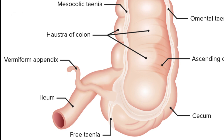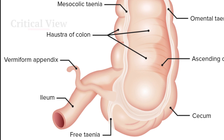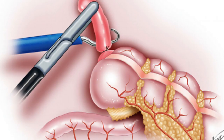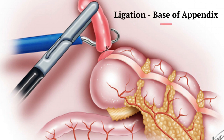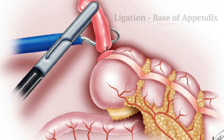Use the appendiceal critical view, in which the appendix is placed at 10 o'clock, the taenia coli and terminal ileum at 3 o'clock. Identification of where the taenia coli merge is paramount to identifying and ligating the base of the appendix during the initial operation.